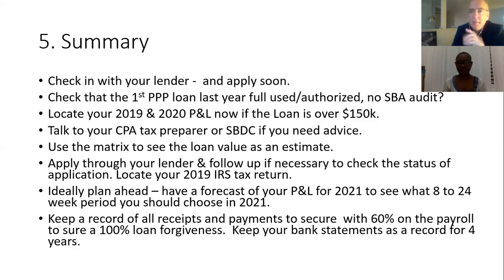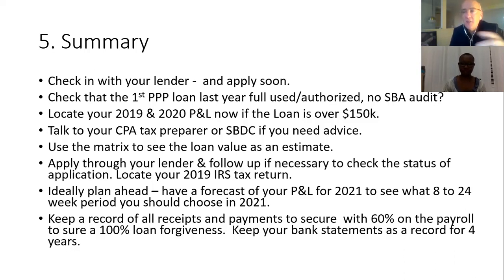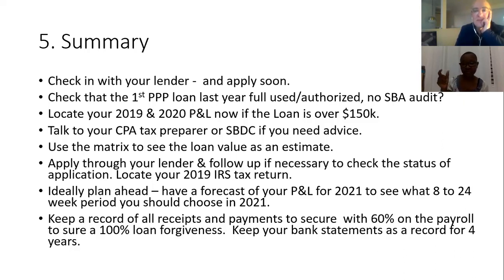Tax returns and income statements tell a story, so be mindful of that. For businesses with uneven gross receipts quarter to quarter, look at all eight quarters (four in 2019, four in 2020) to identify what caused an anomaly or spike. Identifying and explaining those patterns clearly makes all the difference in what you present to the SBA or lender.